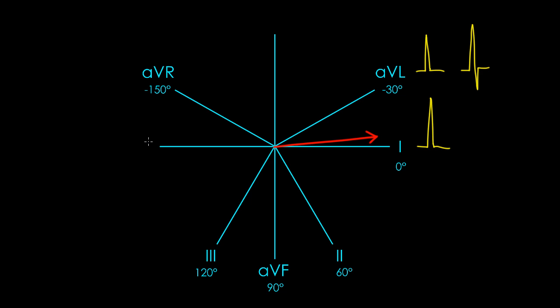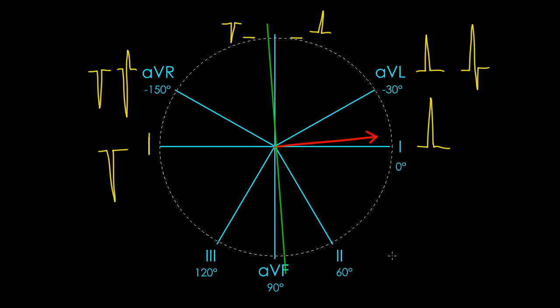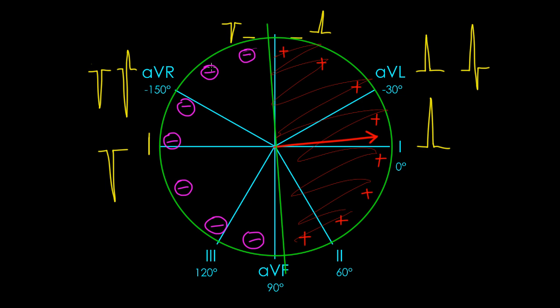If we had a lead directly opposite to lead 1, we'd get a QRS complex that looks like a mirror image — very negative. AVR is close to 180 degrees, so it would look pretty similar though a little less negative. A lead near the axis would look positive but just barely, while a lead on the other side would look negative but just barely. You can see we're forming two semicircles: one on the positive side — leads where the QRS deflection is positive — and one on the negative side, where leads show a negative QRS deflection because the axis is moving away from them.